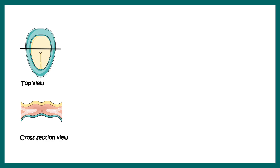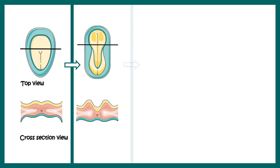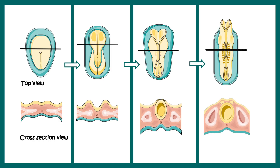This is the top view and the cross-sectional view together. This is the neural plate induction, the neural groove formation, and eventually the edges of the neural groove come close to each other until they fuse — and this is how the neural tube is generated.